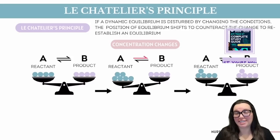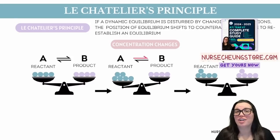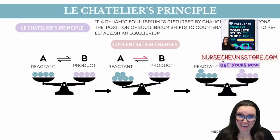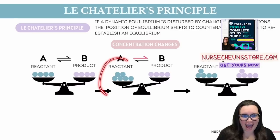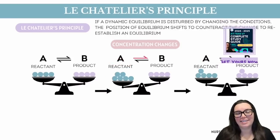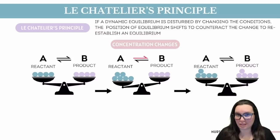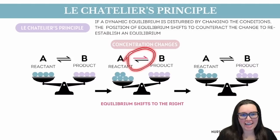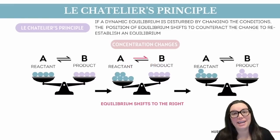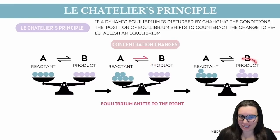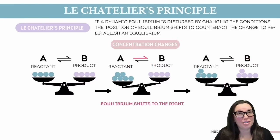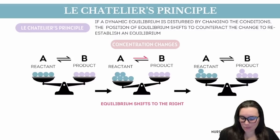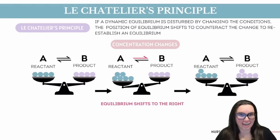One type of stress that we can introduce is changing the concentration of any compound involved in a reaction. For instance, if we add more of a reactant, this adjusts the equilibrium. To counter this, the forward reaction is going to speed up to convert the added reactants into products, re-establishing equilibrium. In this case, we would say that equilibrium has shifted to the right.